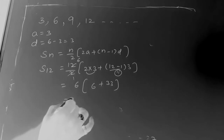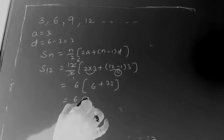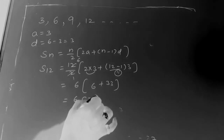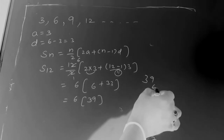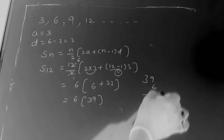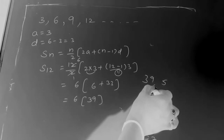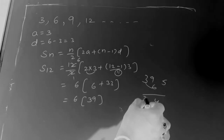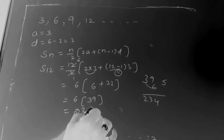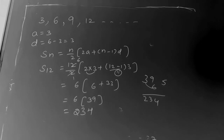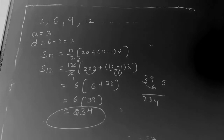So we have 6 × [6 + 33] = 6 × 39. Six times 9 is 54, six times 3 is 18, so 6 × 39 = 234. The total number of plants they are planting is two hundred and thirty-four. This is the way of solving the problem using the formula method.